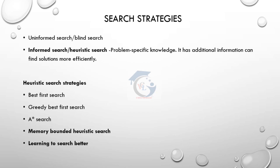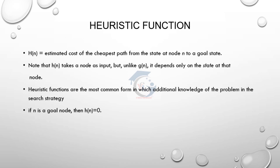In the previous two videos we covered heuristic search strategies including best first search, greedy best first search, and A* search. In this video, we cover memory bounded heuristic search — how an agent can search better.